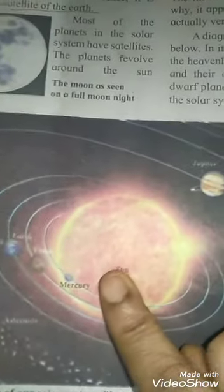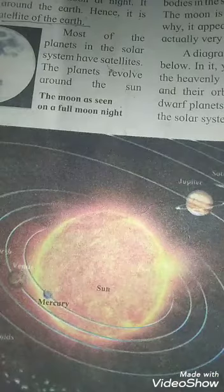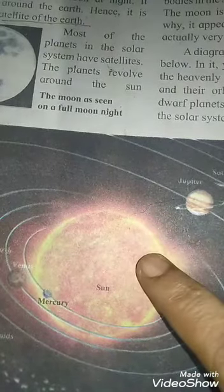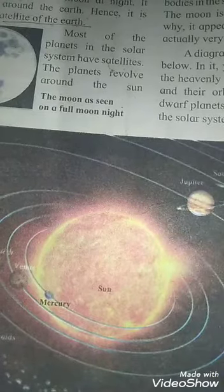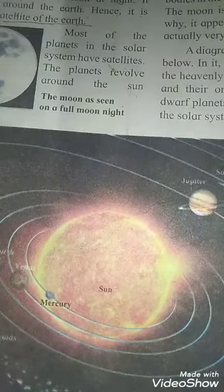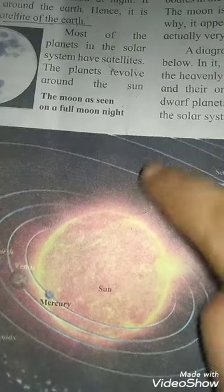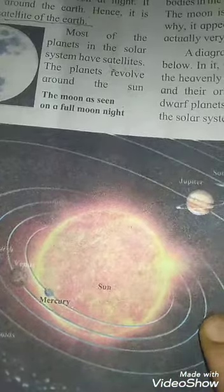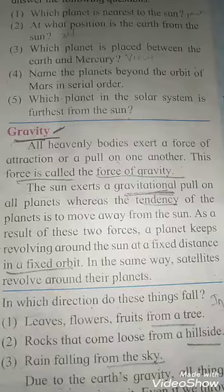For example, if you look at this picture, the sun is bigger in size than other planets. So naturally, the sun has more gravitational force than the other planets, and it has more power to attract the planets. So these planets revolve around the sun. In the same way, satellites revolve around their planets.